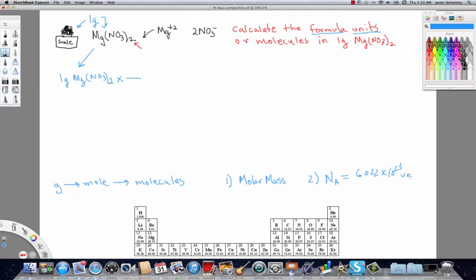And I'm going to abbreviate that as N sub A. Avogadro's number, which is 6.022 times 10 to the 23rd. And I'm going to call it just plain units. It can be molecules, atoms, apples, oranges, whatever. The concept is like a dozen. Only in the case of atoms and molecules, we need a number that's a lot bigger than 12.